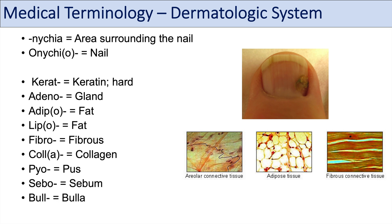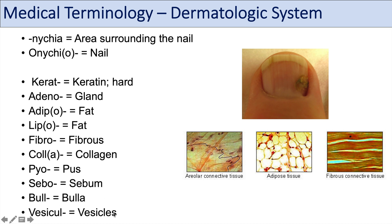Another prefix used to describe a skin lesion more specifically is bul, which refers to bulla. Bullae are fluid-filled raised skin lesions, and you can think of a medical condition known as bullous pemphigoid — a skin condition that has bullae. Another prefix you might see is vesicule, which refers to vesicles. You can think of herpes as a possible associated medical condition with this term.